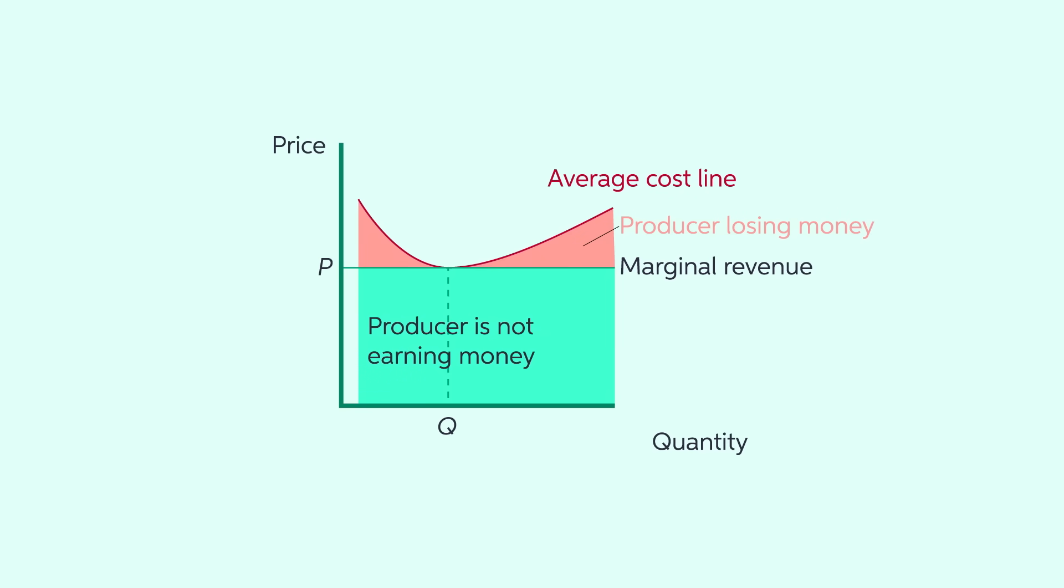If the average cost is higher than the price the producer received for their goods, they are losing money with each sale, a losing strategy in the long run.